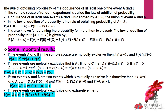Now if we are having more than two events, that means if we have events A, B, and C, the formula becomes: P(A∪B∪C) = P(A) + P(B) + P(C) - P(A∩B) - P(A∩C) - P(B∩C) + P(A∩B∩C). This is the law of addition of probability.